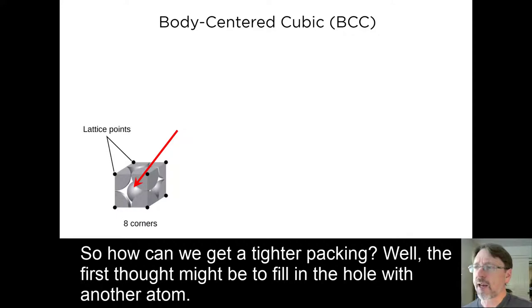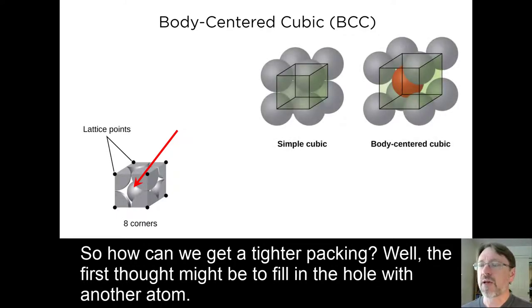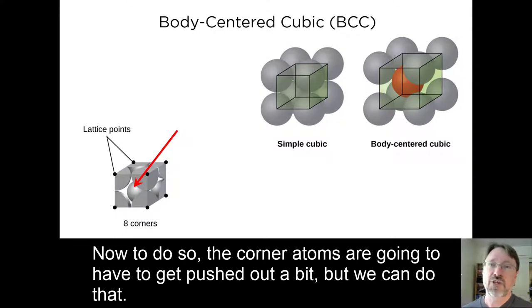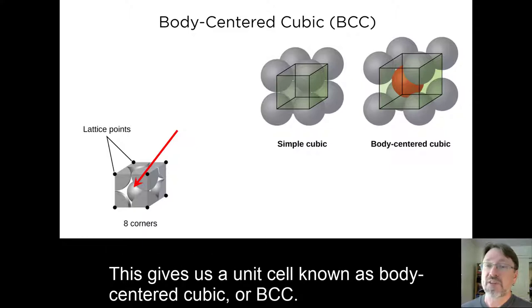So how can we get tighter packing? Well, the first thought might be to fill in the hole with another atom. Now to do so, the corner atoms are going to have to get pushed out a bit. But we can do that. This gives us a unit cell known as body-centered cubic, or BCC.